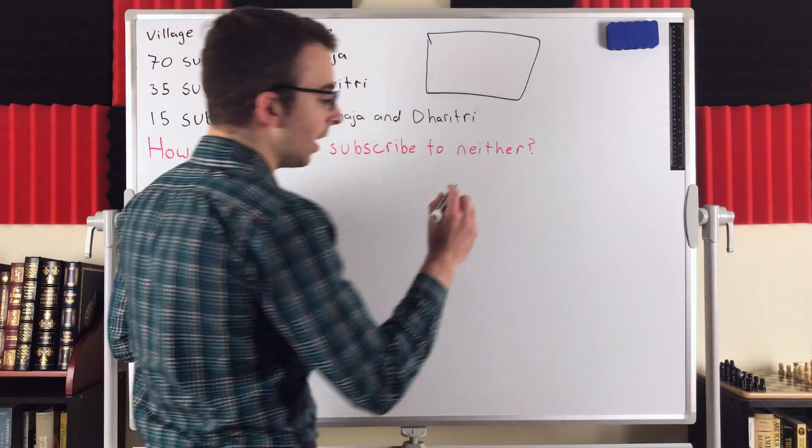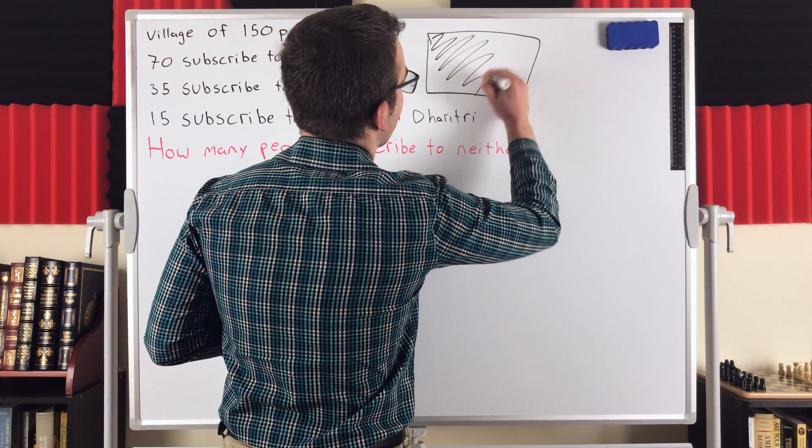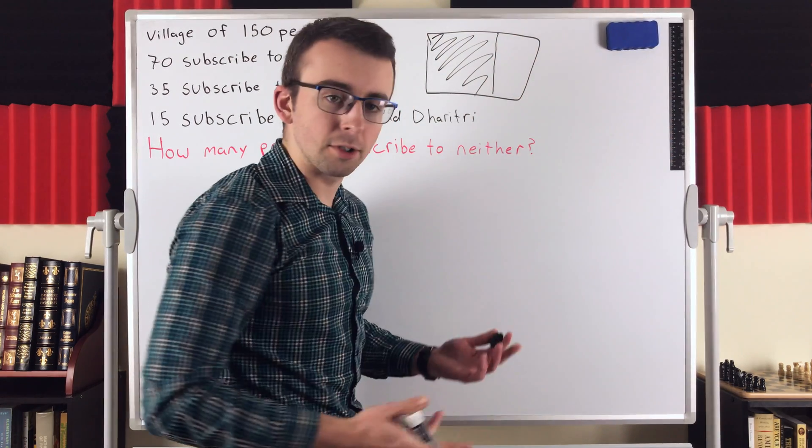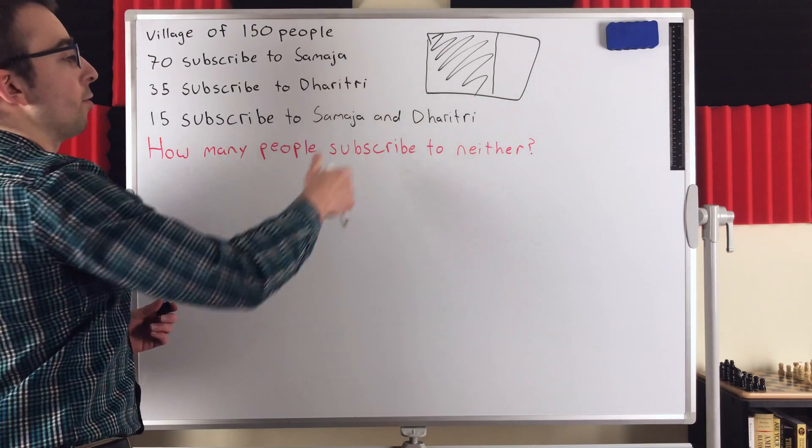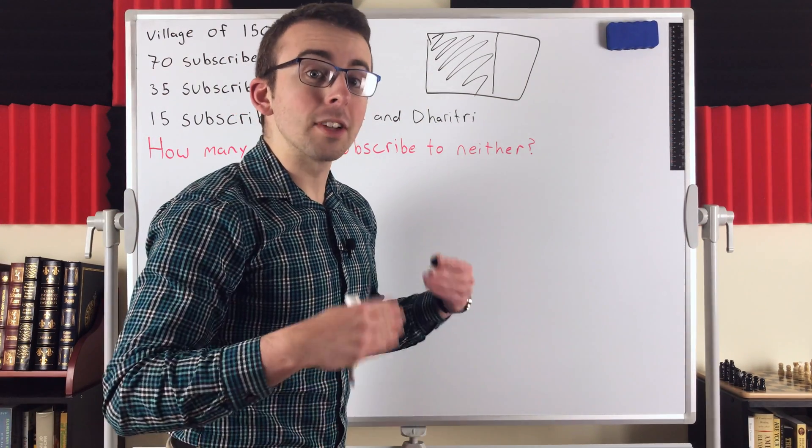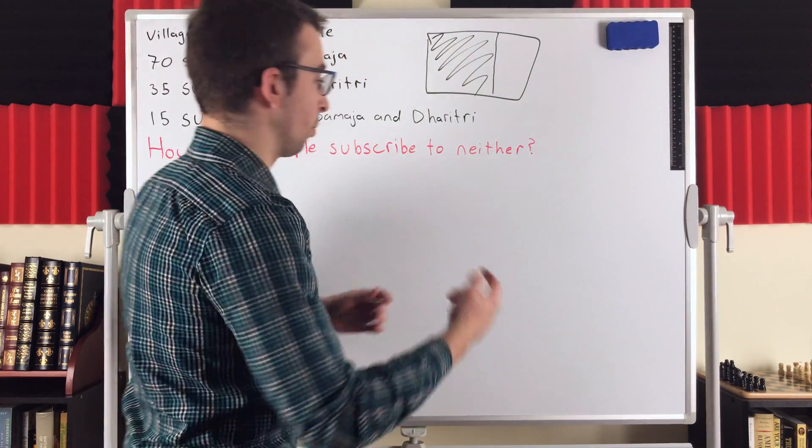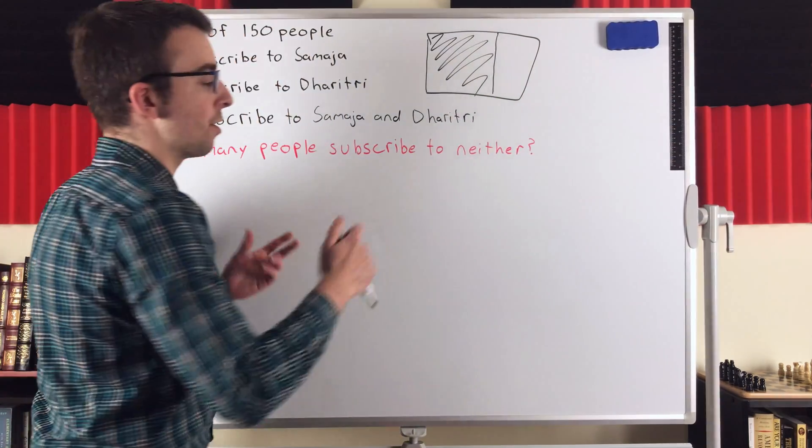of 150 people, and then say this shaded part, these are all the people who are subscribed to one of these papers. They could be subscribed to one, they could be subscribed to both. All that matters is they're subscribed to a paper. Then all of these people in here, that's the answer. Those are the people who are subscribed to neither paper.